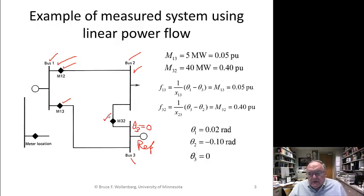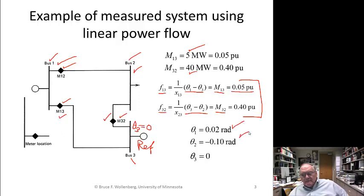So if I take and I give you these measurements, I say, M one-three over here is equal to five, and M three-two is equal to 40, then just knowing those two measurements, don't even need this one over here, the M one-two. I set up the equations for F one-three, which is one over X three, X one minus X three. That must equal the value of M one-three, or 0.05 per unit. Same thing for the F three-two. The flow on three-two is this, is a function of the two variables, theta three minus theta two, and I have two equations and two unknowns. I can solve for the radian value, and then I can compute the flows.